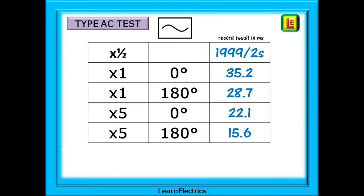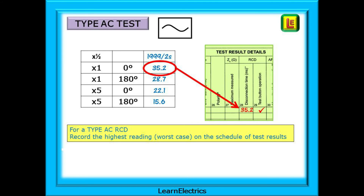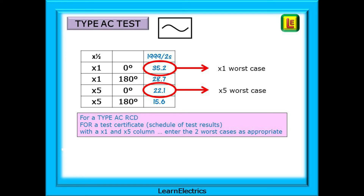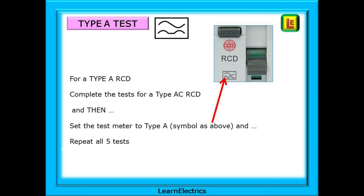This chart shows the five tests and some typical test results in blue. For the times half test of the rated current the meter holds the test signal for two seconds and the RCD should not trip — many meters show 1999 milliseconds, the most they can display, which is equivalent to two seconds. Then a times one at zero degrees and 180 degrees, and a times five at zero and 180 degrees as well. Choose the worst case tripping time — the biggest number — and record this on the schedule of test results along with a tick to show the test button works. Some test certificates by NAPIT, NICEIC etc. will have two columns for the tripping time — a times one column and a times five column — in which case choose the worst case for each.